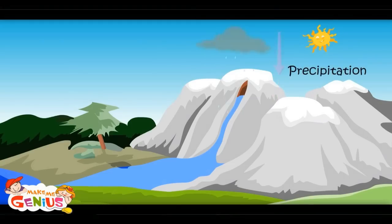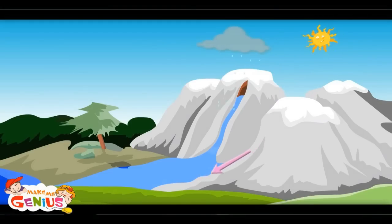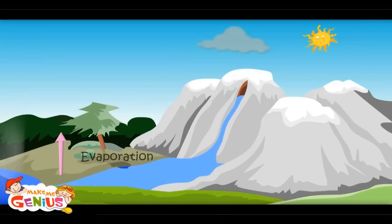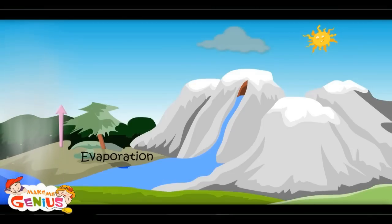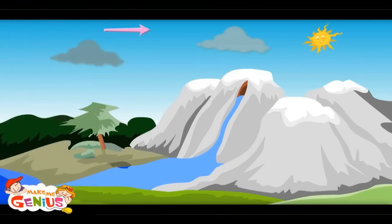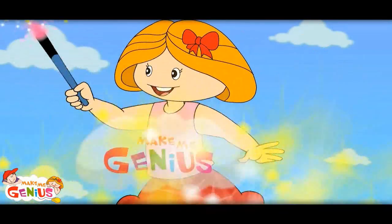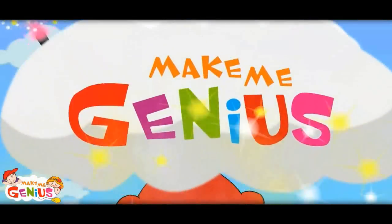See Jimmy, now the rain drops have become part of the river. Now again it would become vapor when the sun comes out. That is why it is called the Water Cycle. My magic wand would show this.